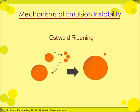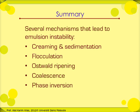In summary, there are several mechanisms that could destabilize an emulsion. These are: creaming and sedimentation, flocculation, Ostwald ripening, coalescence, and phase inversion.